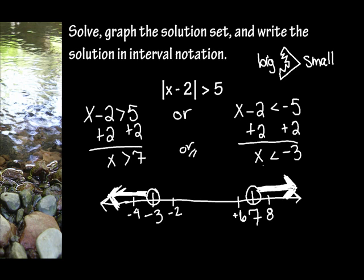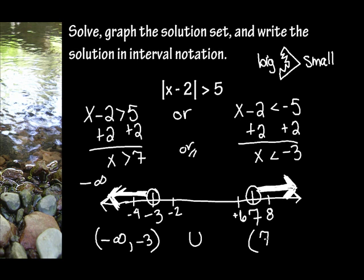Our final job is to write the solution in interval notation. Students get mixed up, but it's easy. This does not equal negative 3 — it's an open circle. Open circles are always a parenthesis. This number is negative 3, and it's going to negative infinity, so that goes on the left side. This means negative infinity to negative 3, and it doesn't include them. Union means we're going to put these together. This is not including, so it's a parenthesis at 7, and then it goes to infinity. We don't have a number for infinity because any number you pick, I can pick one that's higher — so that's why we have a parenthesis there.